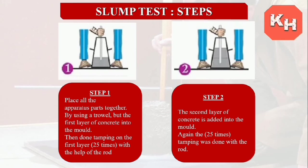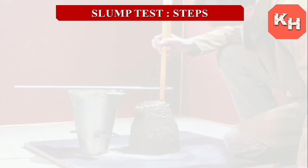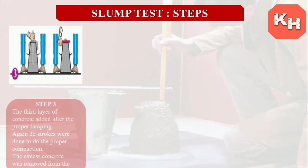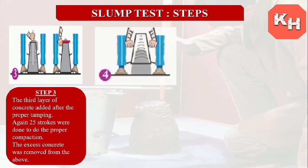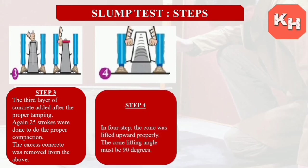Step 3: The third layer of concrete is added. After proper placement, again 25 strokes are done for proper compaction. The excess concrete is removed from the top. Step 4: The cone is lifted upward properly — the cone lifting angle must be 90 degrees. Care should be taken that the cone is lifted vertically at 90 degrees.